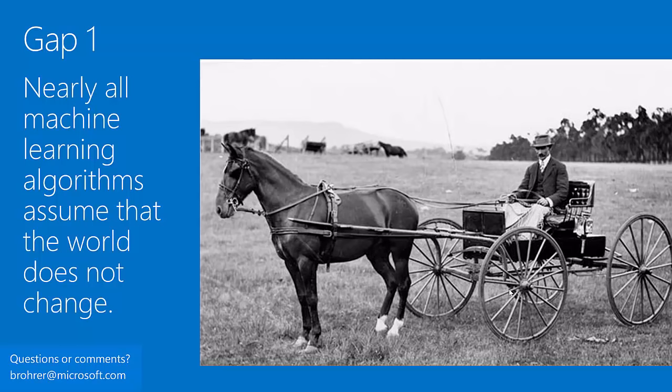There are some gaps to be aware of when using your model. Nearly all machine learning algorithms assume the world doesn't change. If you gather your data and the world changes in some fundamental way, your data may all be invalid. If I had gathered information on air travel right up until September 10th, 2001 and then tried to make predictions about September 15th, 2001, they would be completely wrong — because the world changed fundamentally on September 11th. You need to make sure your data is still relevant and the world hasn't changed out from under you.